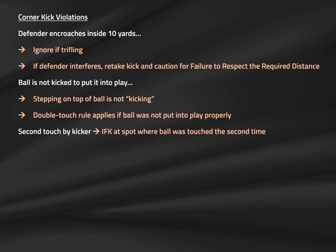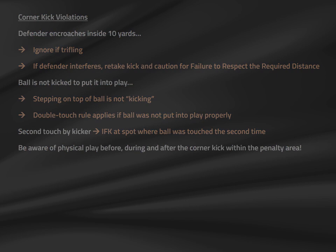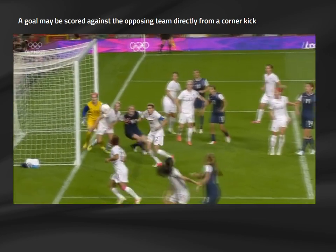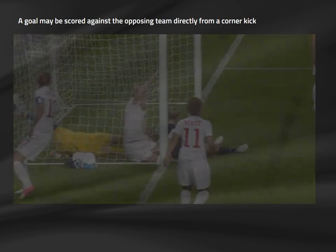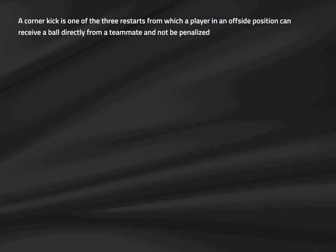Corner kicks involve a lot of physical positioning both before and after the ball is in play. The referee needs to be alert for attackers interfering with the goalkeeper's movement, or players from either team grabbing jerseys or obstructing movement. A goal against the opposing team may be scored directly from a corner kick — in soccer slang known as an Olimpico, as illustrated by U.S. women's national team legend Megan Rapinoe. A goal may not be scored against the kicker's own team. The corner kick is the third and final restart from which a player can receive the ball directly in an offside position and not be punished.